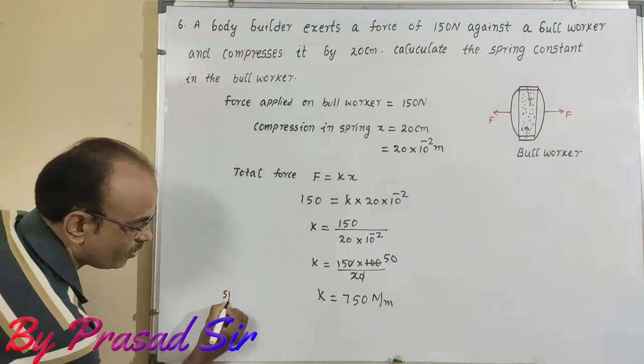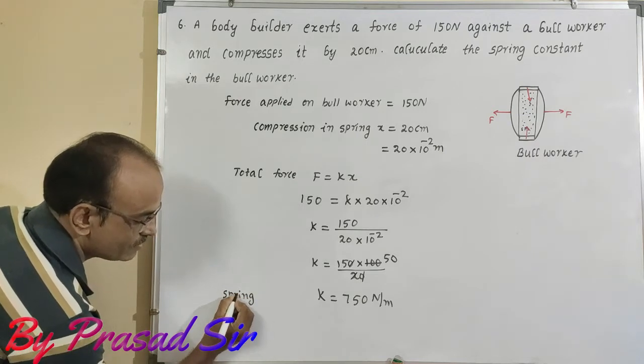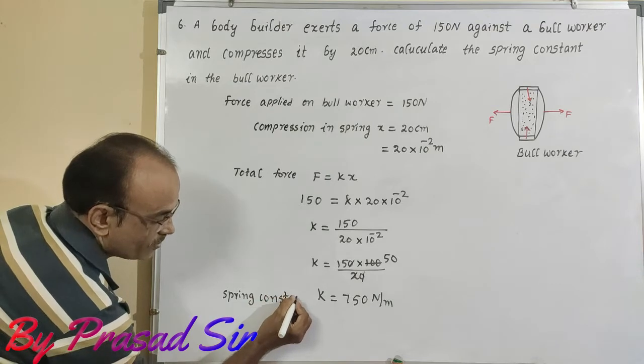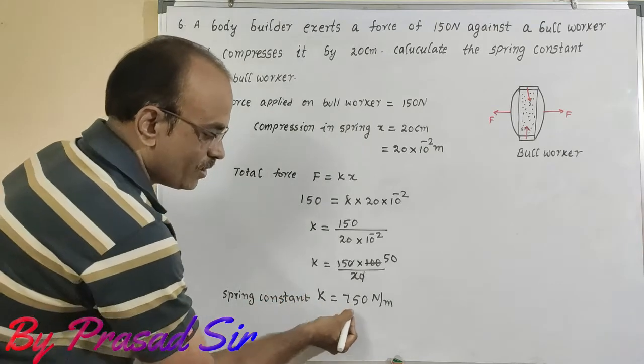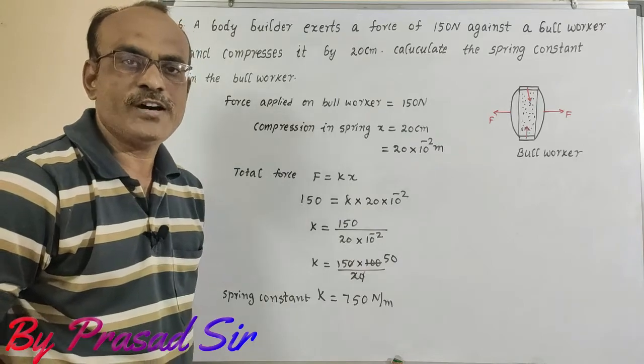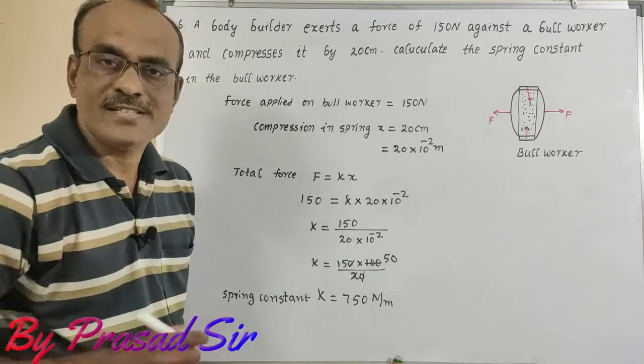What is this one called? That is spring constant k is equal to 750 newton by meter. This is the solution for question number 6.